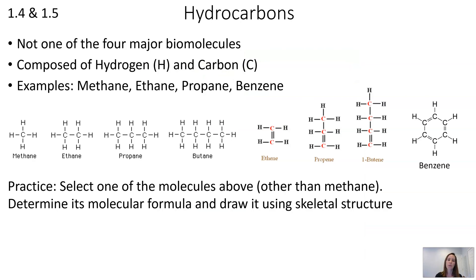Hydrocarbons are not one of the four major biomolecules — carbohydrates, proteins, lipids, and nucleic acids — but they are an important group of molecules. They're composed entirely of hydrogen and carbon. Some examples are methane, ethane, propane, and benzene. Those names have a system that tells you how many carbons they have and whether those carbons have all single bonds or some double or triple bonds. We won't worry about that level of detail for now, but you should be able to recognize hydrocarbons.